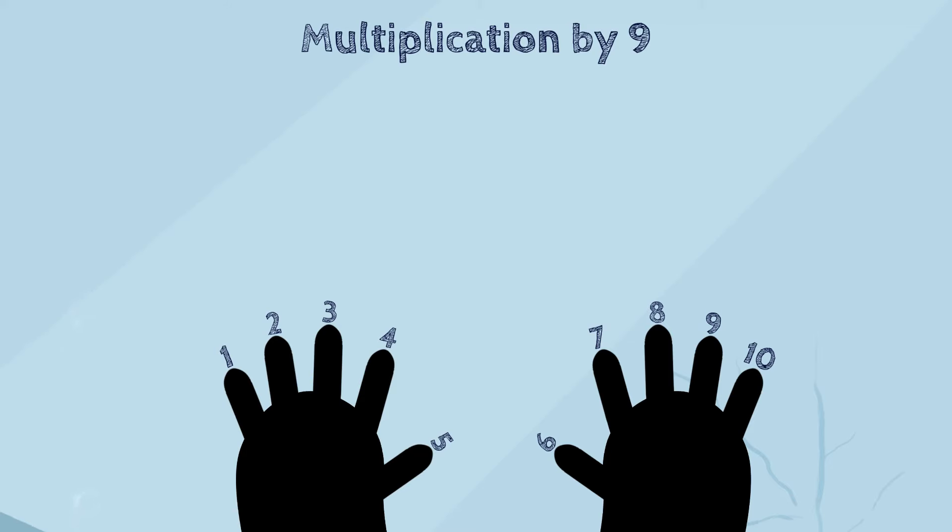Now, let's say that you would like to multiply 3 by 9. To do this problem, you need to fold down the finger of the number you want to multiply by 9. In this case, we need to fold down the third finger because we are multiplying 3 by 9.